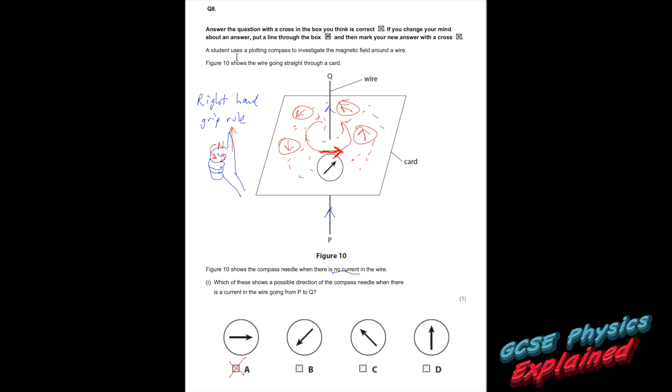Number 8. A student uses a plotting compass to investigate the magnetic field around the wire. Figure 10 shows the wire going straight through a card. Figure 10 shows the compass needle when there is no current in the wire. Which of these shows a possible direction of the compass needle when there is a current in the wire going from P to Q?